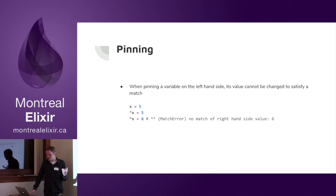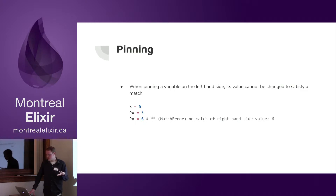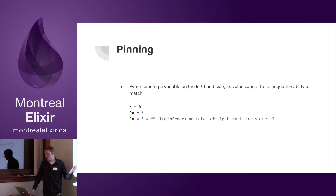This is where pinning comes in. When we're pinning, we're saying we have this dynamic value and now we want to use it on the left-hand side of the match operation. I looked into this and I think this is one of the differences between Erlang and Elixir. In Erlang, there's no resetting of variables on the left-hand side — once a variable is set, it stays. Pinning is, I think, a bit unique to Elixir.